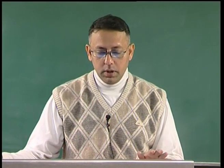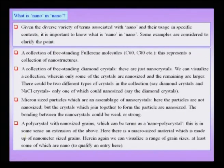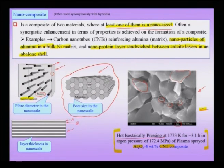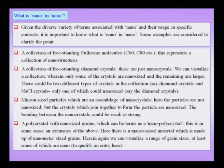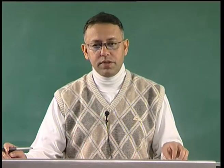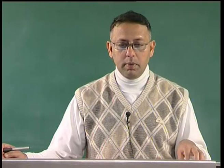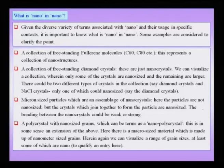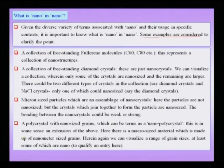We have been exposed to quite a few nano terms and we have to be careful in understanding what is nano in nano. In a nano composite for instance, not everything is nano — it is only a specific entity in the structure which is nano. We have to specifically ask ourselves: what is nano in nano? Because a nano prefix may often be attached to the entire material, yet not everything within the nano material may actually be nano.